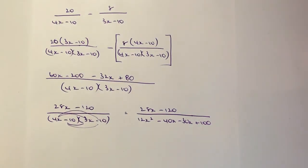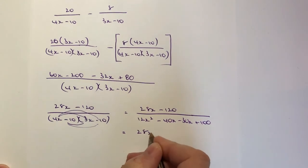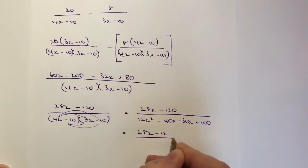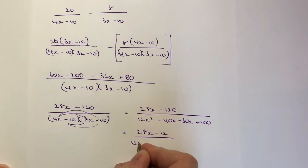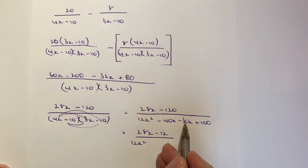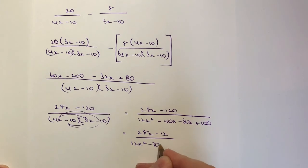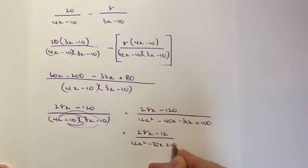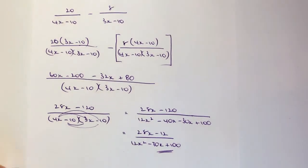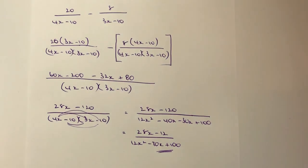So if I gather up those like terms and just tidy that up a little bit, on the top I'm going to get 28x minus 120. And on the bottom, I'm going to get 12x squared minus 40 minus 30 is minus 70x plus 100. And that's the answer to this particular question.